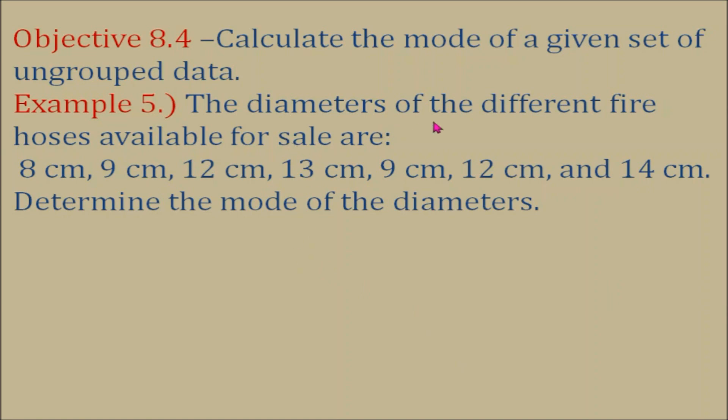Example number five, the diameters of the different fire hoses available for sale are 8CM, 9CM, 12CM, 13CM, 9CM, 12CM, and 14CM. Determine the mode of the diameters. Notice here that we have two 9CM's and we also have two 12CM's. So, this means our modes are 9CM and 12CM.